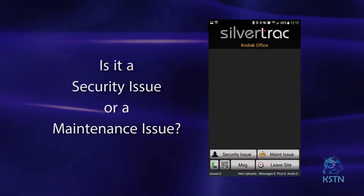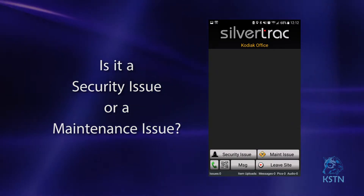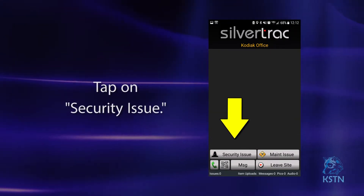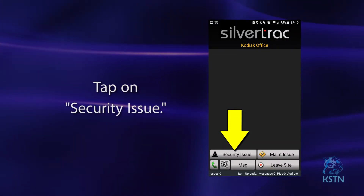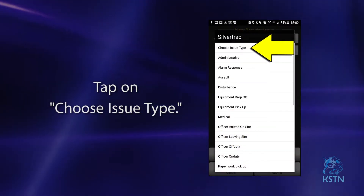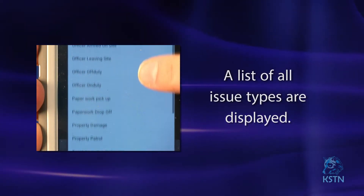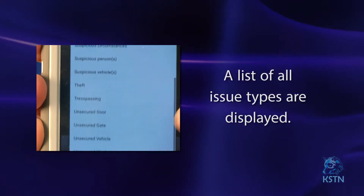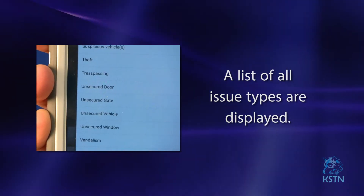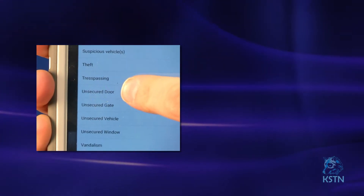To fill out an incident report, you first need to decide if it is a security issue or a maintenance issue. For this demonstration, we'll be reporting a security issue. Tap on security issue. Now pick an issue type by tapping on choose issue type. That will open a drop-down list of all the issues in the system. This list is updated from time to time, so if you don't see what fits the incident that occurred, find the closest one. We'll use unsecured door for this demonstration.